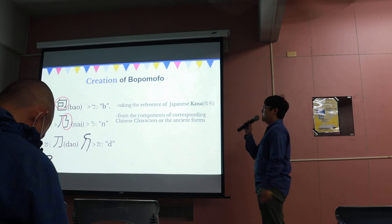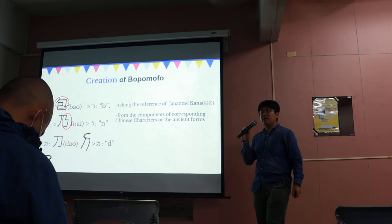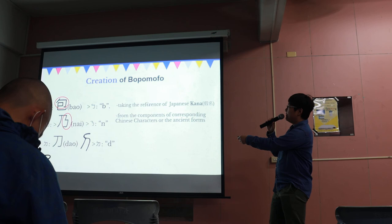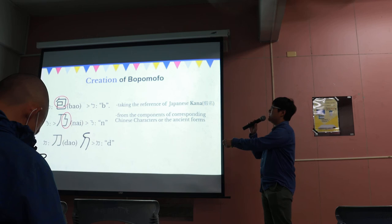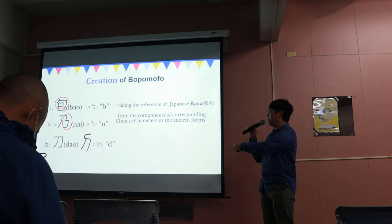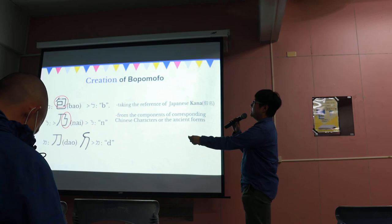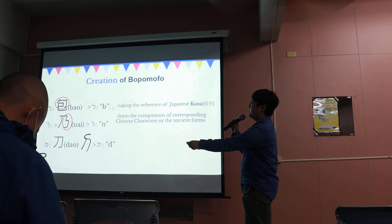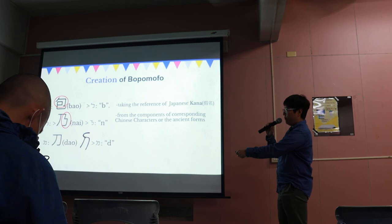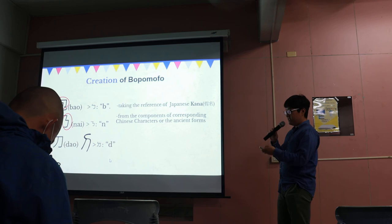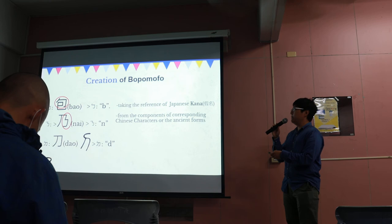So next, let's talk about the creation of Bopomofo. How did the scholars create it? They took reference from the Japanese Kana. If you've ever learned Japanese before, you'll know that Kana characters are derived from Chinese characters. So Bopomofo was created from the components of Chinese characters by ancient scholars. For example, this symbol is from the upper component of a Chinese character, so it sounds 'Bo'. And this symbol is from the right component of 'Nai', so it sounds 'Nai'. And this symbol is from the ancient form of the character 'Dao', so it sounds 'Dao'. That's the way they created Bopomofo.